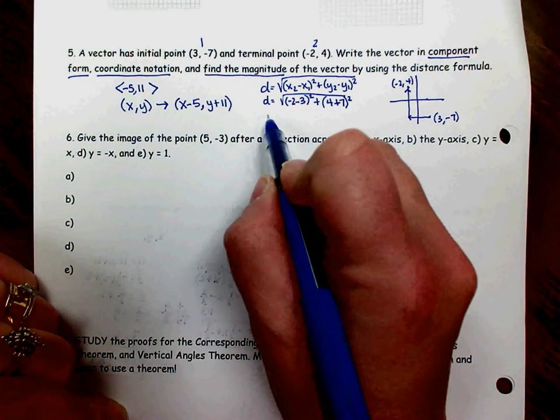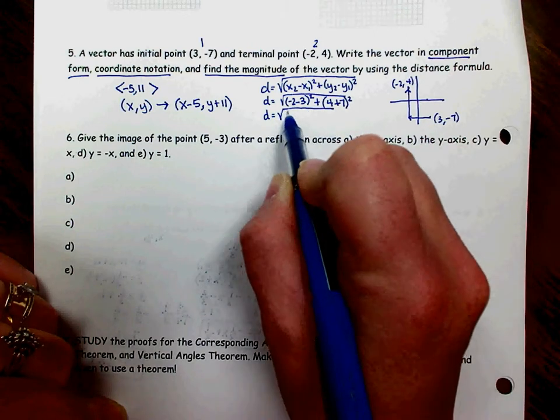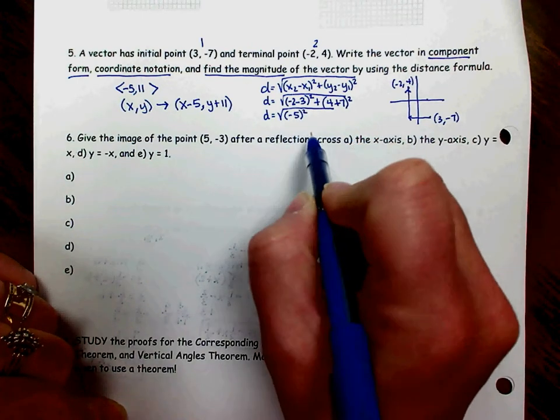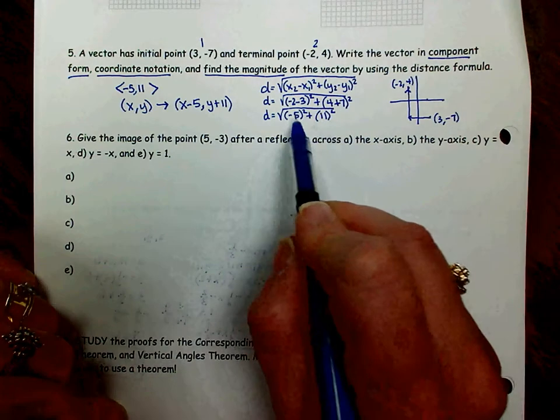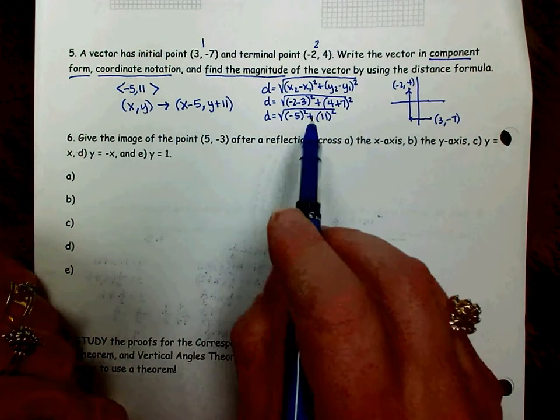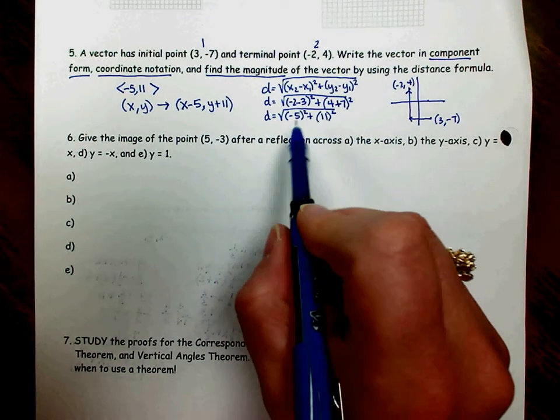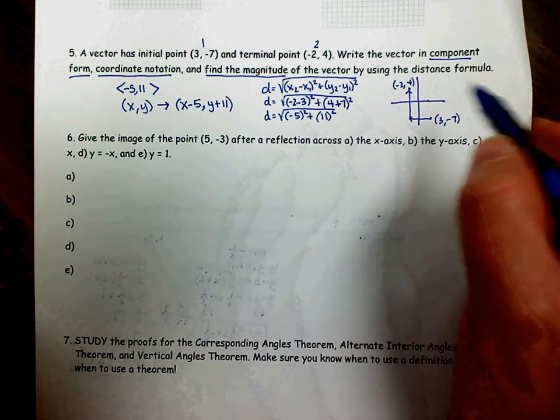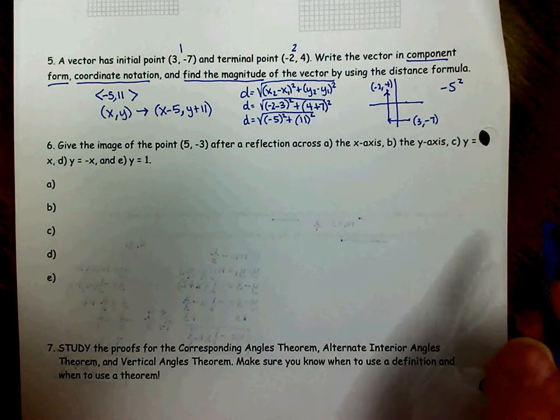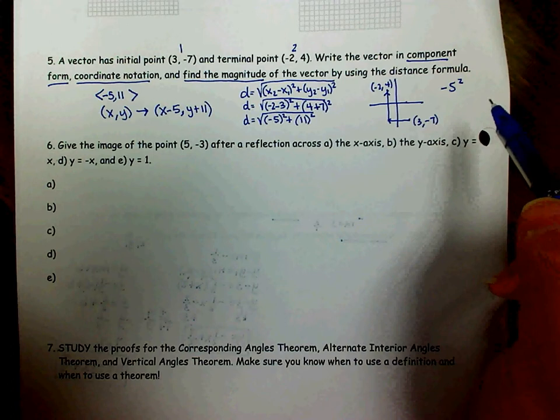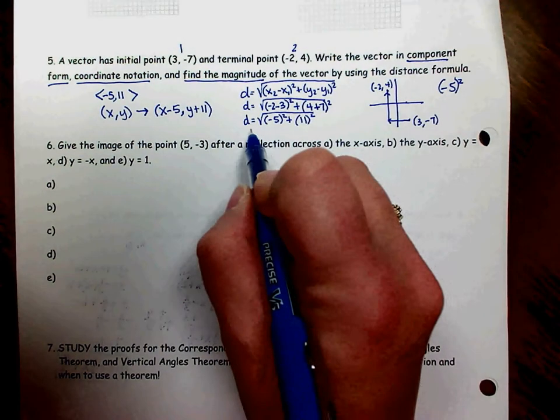So we will do the simplification inside the parentheses first. -2 minus 3 is a -5, so -5 squared, plus 4 plus 7 is 11. So I have an 11 square. These numbers should look very familiar. They're the same numbers in our component form, -5 and 11. Don't forget to square those. Notice I put the -5 in parentheses. Remember that should not be put into your calculator as -5 squared without parentheses, or else your calculator will tell you that's -25. You want the entire number -5 to be squared. That's -5 times -5, which is a positive 25.